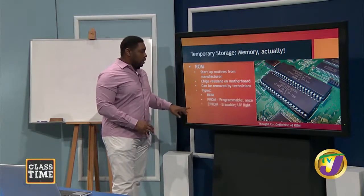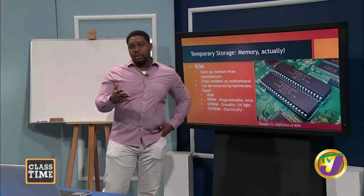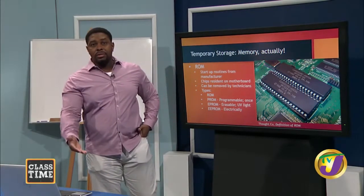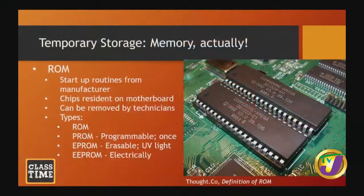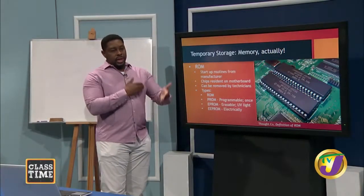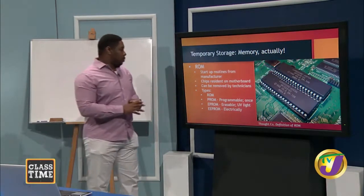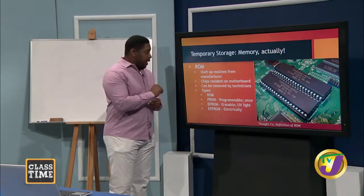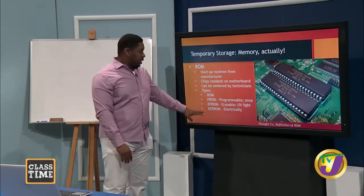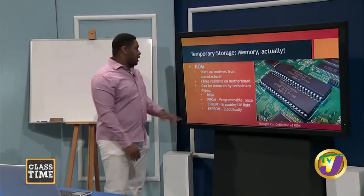There are four types of ROM. First is ROM — read only memory — which the manufacturer places on the board; if you corrupt it, you may as well buy another computer. Then there's PROM — programmable ROM — which can be programmed once after creation. There's EPROM — erasable programmable ROM — which uses UV light to erase the chip. And finally EEPROM — electrically erasable programmable read only memory. The evolution of EEPROM brought about flash memory, which most of us know from our phones.